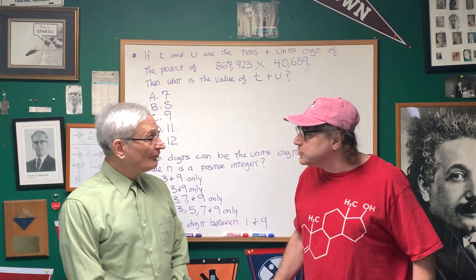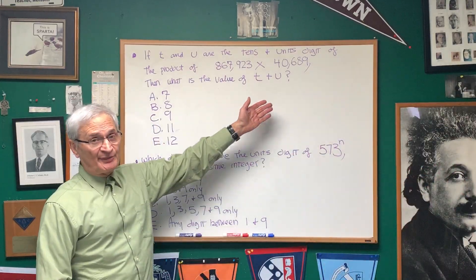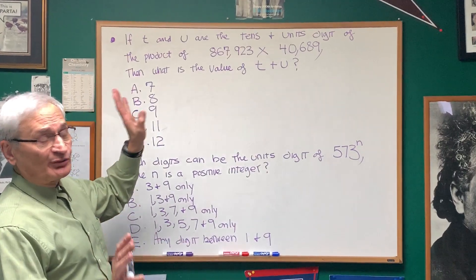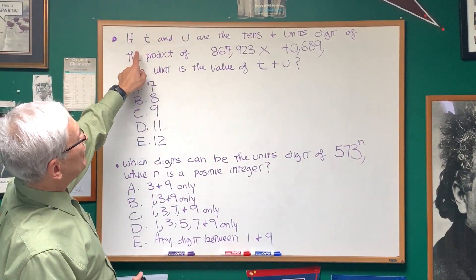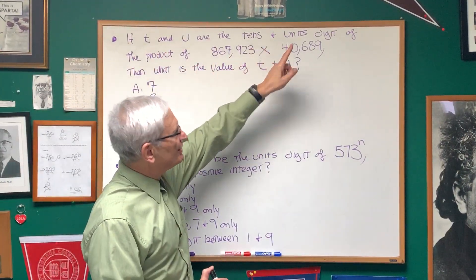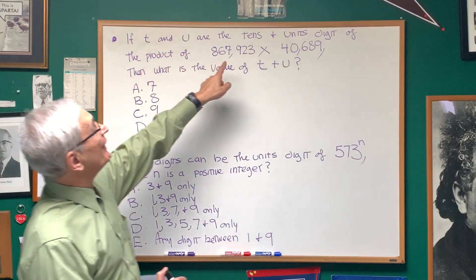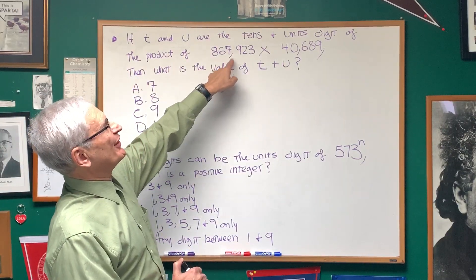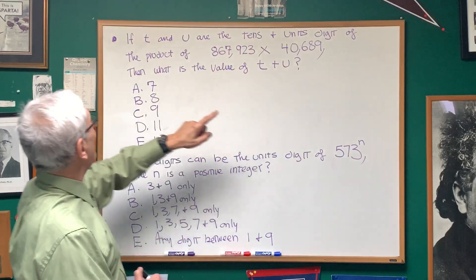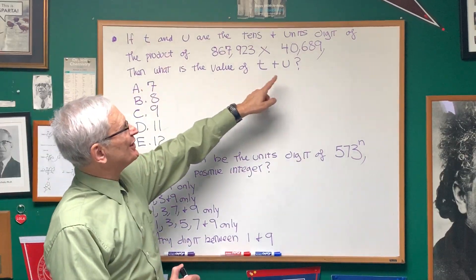Alright, Professor, show us what you got. Okay, this is the kind of problem you'll find on the DAT, a good quantitative reasoning problem. If T and U are the tens and units digit of the product of 867,923 times 40,689, then what is the value of T plus U?